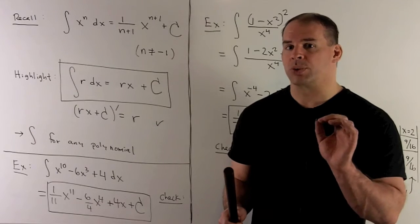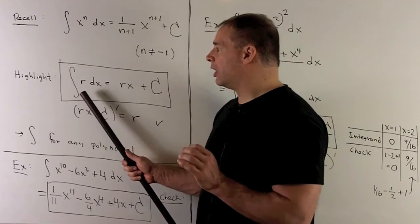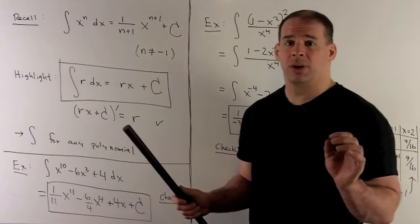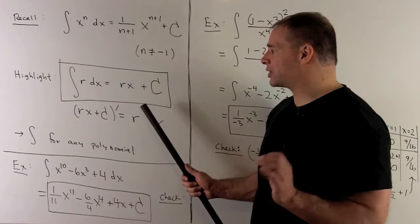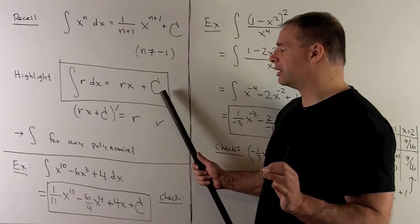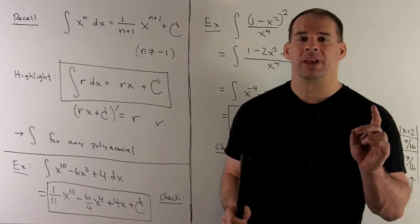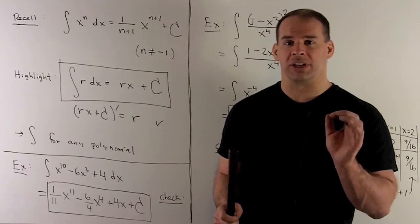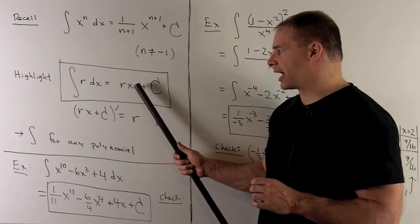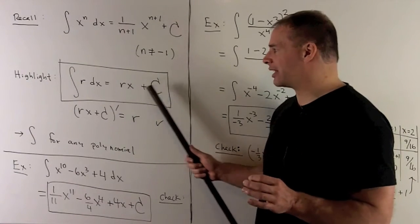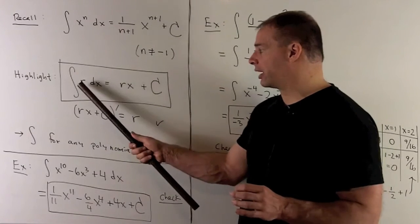One rule worth noting separately: if I take the indefinite integral of r, a constant, with respect to x, we get r times x plus a constant of integration. You can think of this as r times x to the zero power — add one, flip it over, and you get x over one, which is just x. So we have r times x. If you take its derivative, out comes r, which is our integrand.